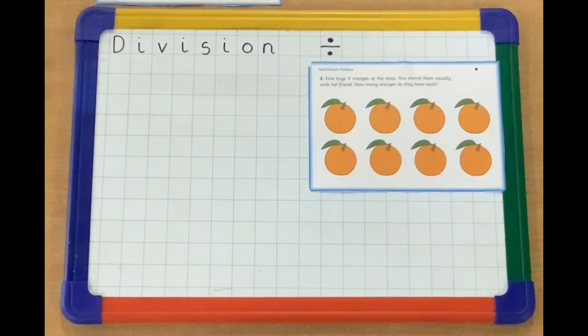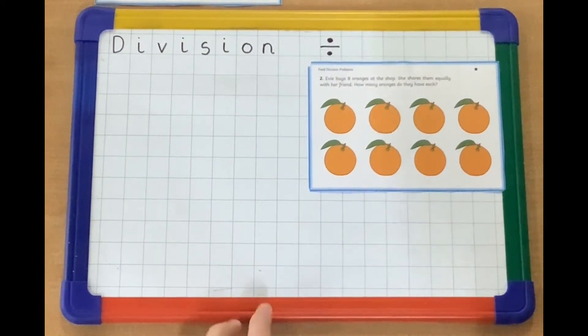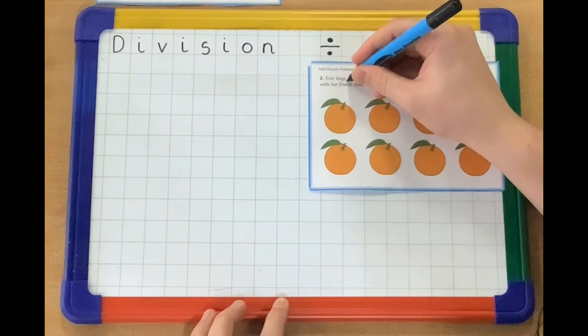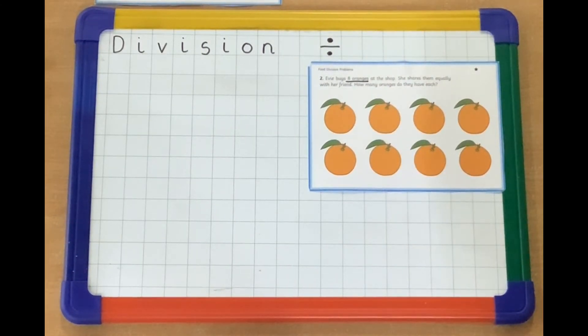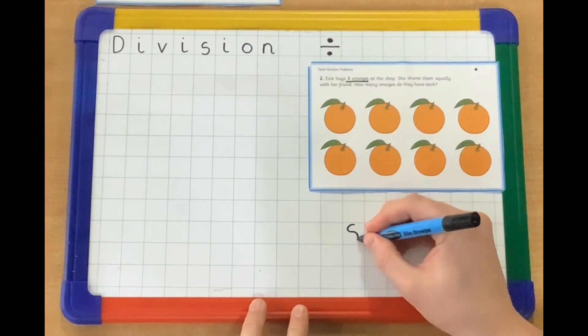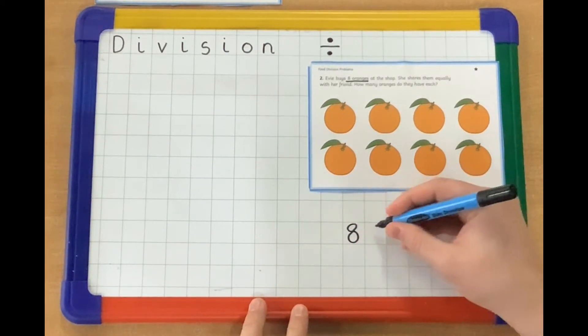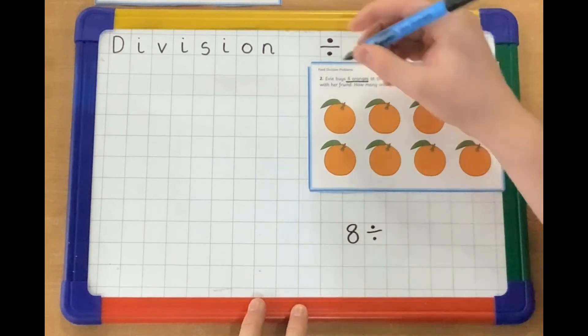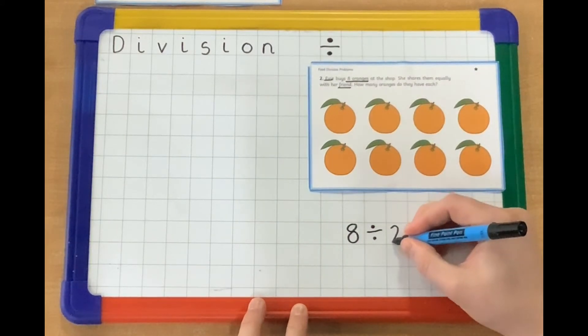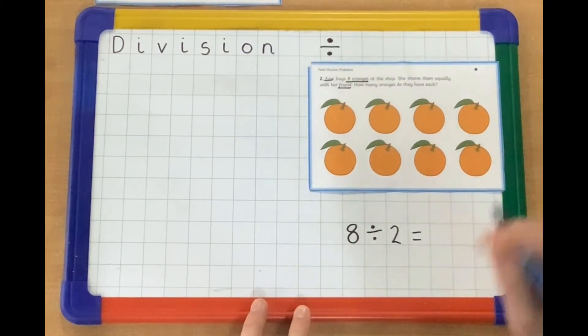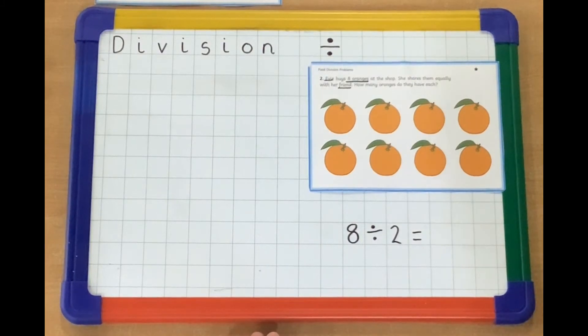Let's see first if we can find what numbers we're going to need to use. So Evie buys eight oranges. Okay, so we know that we're going to need to share our eight oranges at the shop. She shares them equally with her friend. How many oranges do they each have? So we have eight, and we are sharing them between Evie and her friend. So we're doing eight divided by two equals, you might know the answer already, but we're going to work through it together.